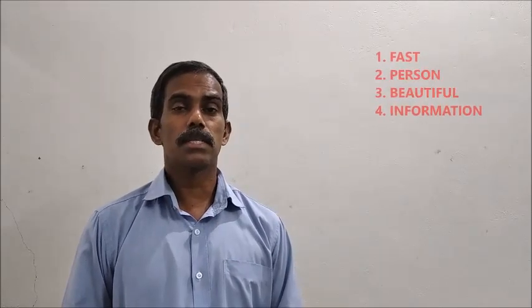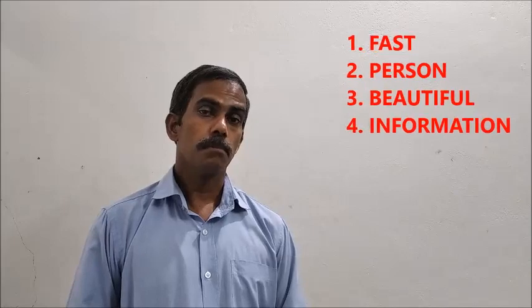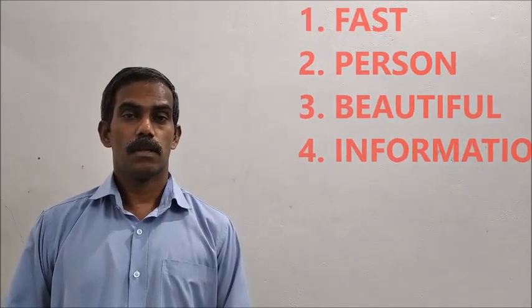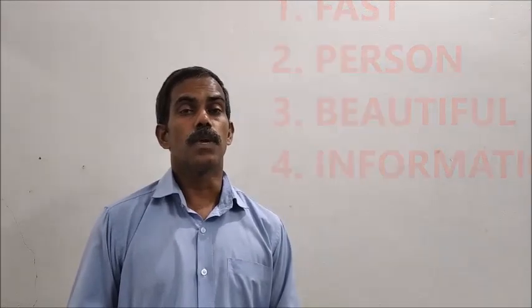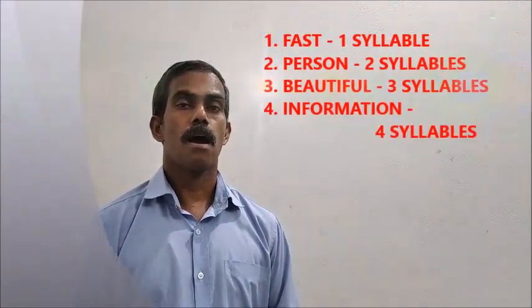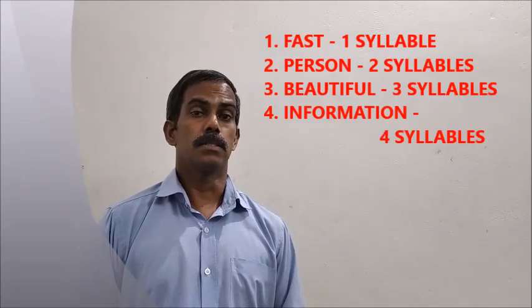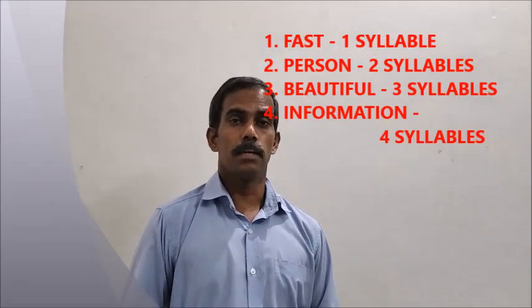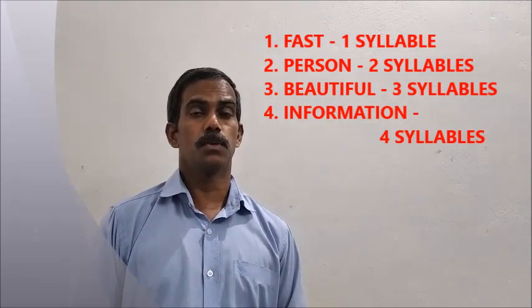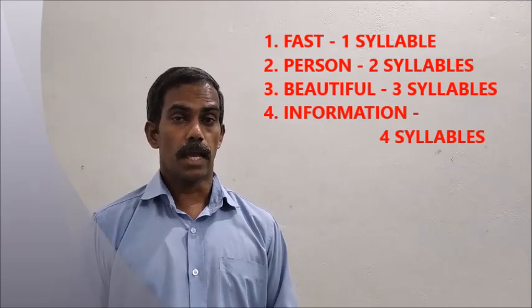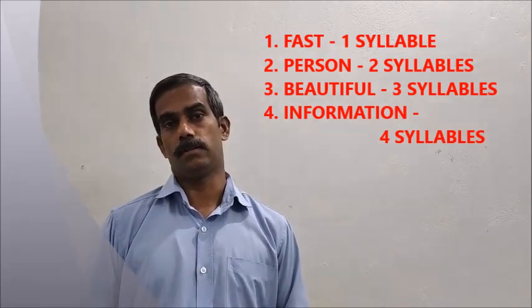For example, let us look at the following words: fast — how many syllables are there? Person, beautiful, information. In the word 'fast' we have only one syllable. In 'person' we have two syllables: per-son. In 'beautiful' we have three syllables.